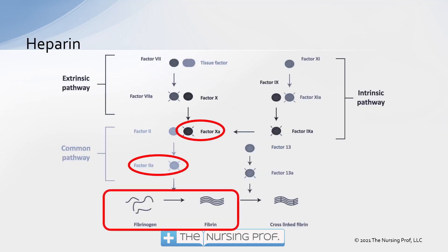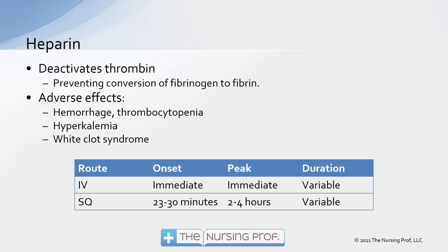Our next anticoagulant is heparin. Heparin works by mediating factor 10a and factor 2a in the common pathway, which also helps decrease the formation of fibrin from fibrinogen. Heparin deactivates thrombin, which helps prevent that conversion. Adverse effects include hemorrhage, thrombocytopenia, hyperkalemia, and white clot syndrome.